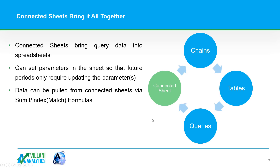Lastly, connected sheets — this is what brings the query data into your spreadsheets. You can set your parameter values here and just click a refresh button. When you move from January to February, all you have to do is flip that parameter; you don't need to rebuild any other components. All of your data automatically pushes through everywhere it's referenced. You can then pull data from your connected sheets into your actual reports and spreadsheets using commands like index-match formulas, making it very easy to send the data everywhere it's needed.